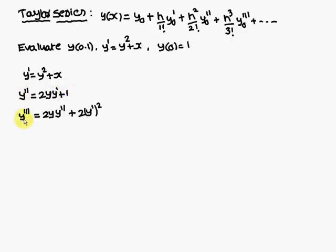Next we find y''' by differentiating y''. We apply the product rule to 2y·y'. Keeping 2y fixed, the differentiation of y' gives y''. Then keeping 2y' fixed, the differentiation of y gives y'. So y''' = 2y·y'' + 2(y')². The differentiation of the constant 1 is 0.